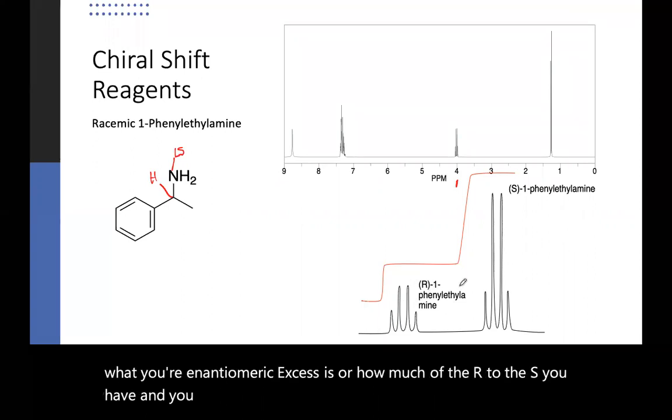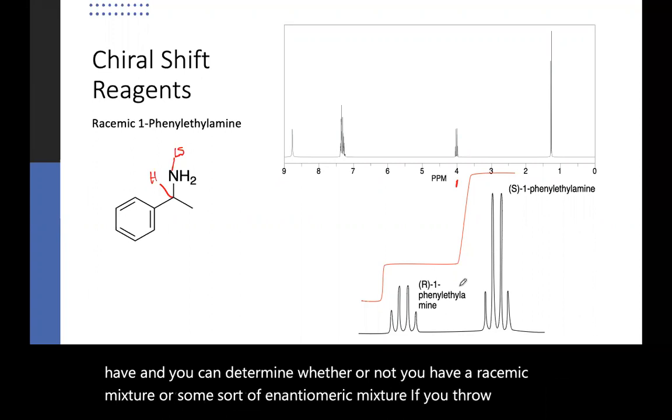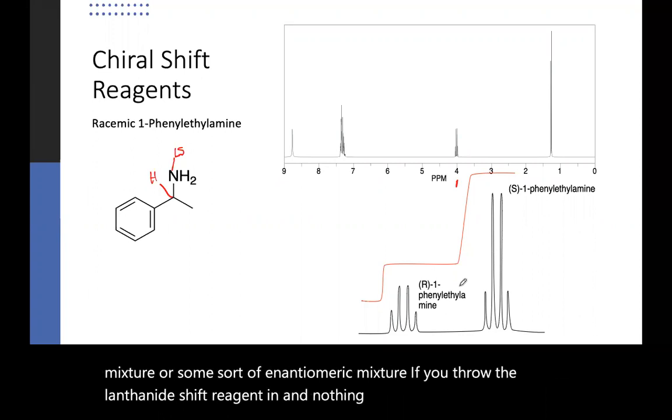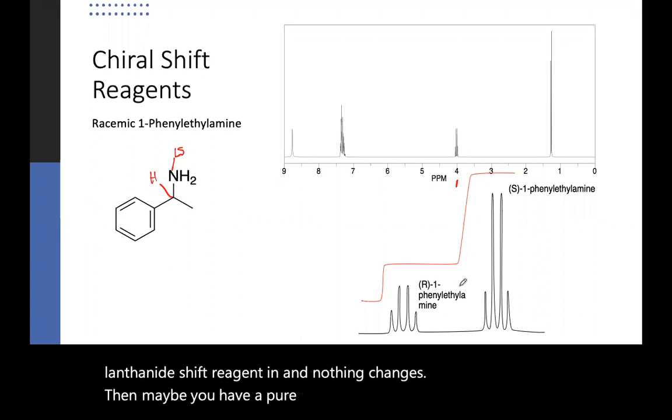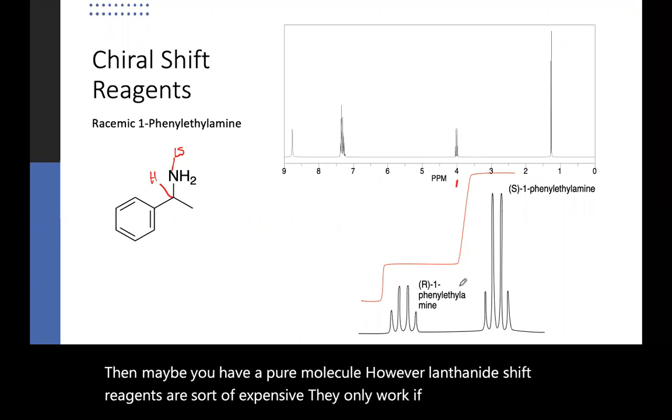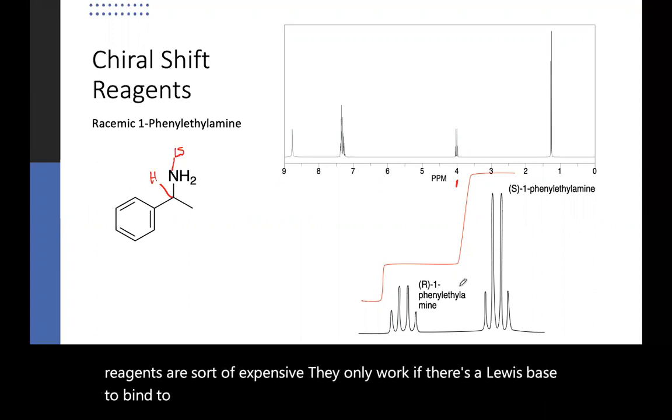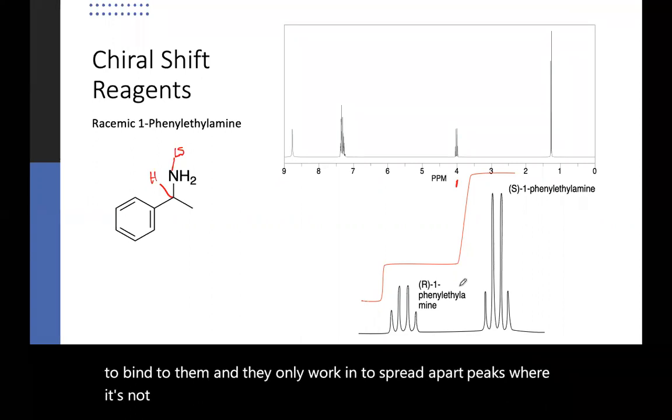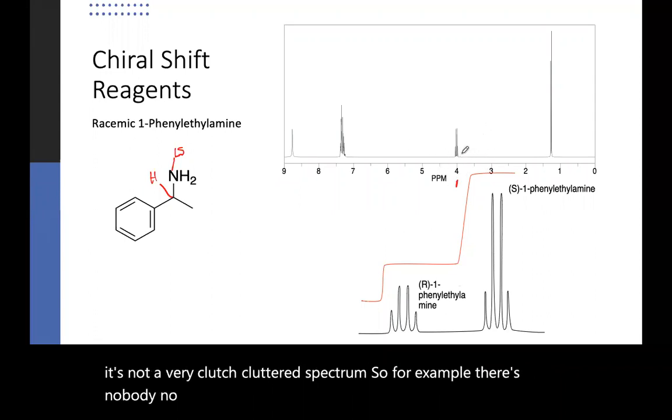And you can determine whether or not you have a racemic mixture or some sort of an enantiomeric mixture. If you throw the lanthanide shift reagent in and nothing changes, then maybe you have a pure molecule. However, lanthanide shift reagents are sort of expensive. They only work if there's a Lewis base to bind to them and they only work to spread apart peaks where it's not a very cluttered spectrum. So for example, there's nobody, no other peaks near this peak at 4, so when they spread out it doesn't overlap with other peaks.